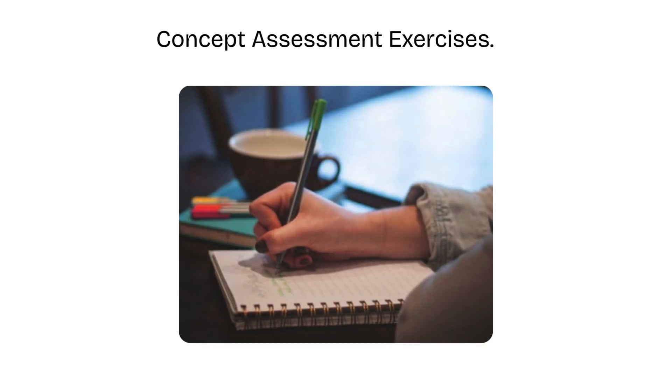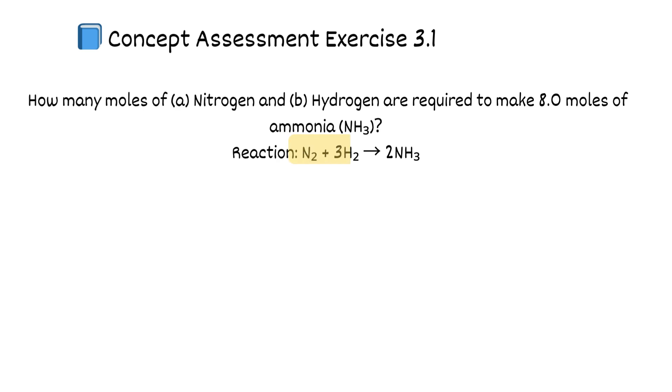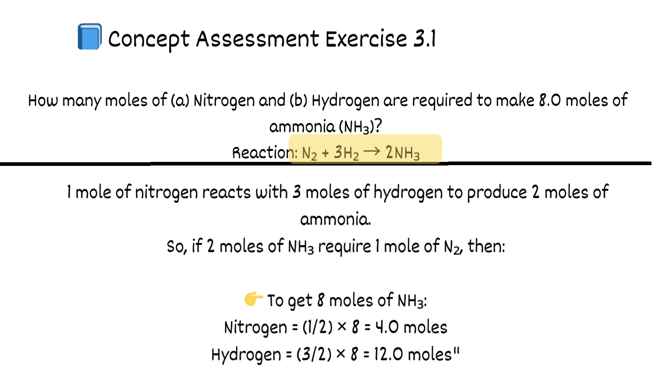So grab your pen and let's solve these step by step. Concept Assessment Exercise 3.1. How many moles of nitrogen and hydrogen are required to make 8.0 moles of ammonia NH3? Reaction: N2 plus 3H2 equals 2NH3. This balanced equation tells us that 1 mole of nitrogen reacts with 3 moles of hydrogen to produce 2 moles of ammonia. So, if 2 moles of NH3 require 1 mole of N2, then to get 8 moles of NH3, nitrogen equals 1/2 times 8 equals 4.0 moles. Hydrogen equals 3/2 times 8 equals 12.0 moles.